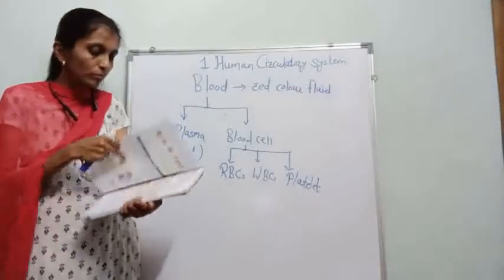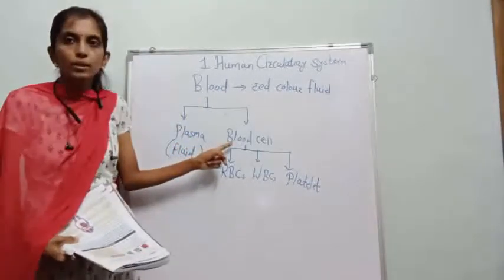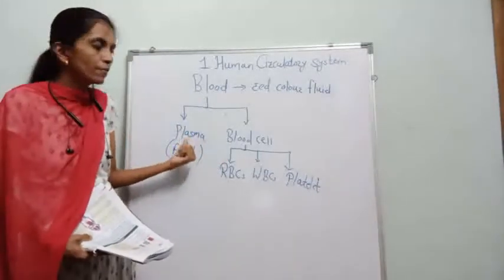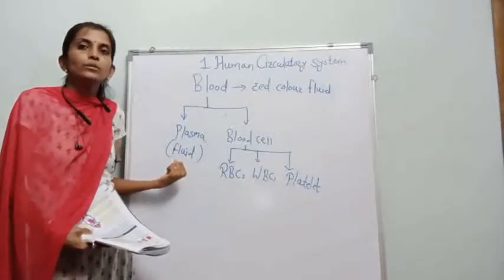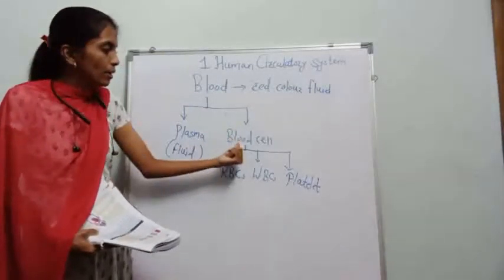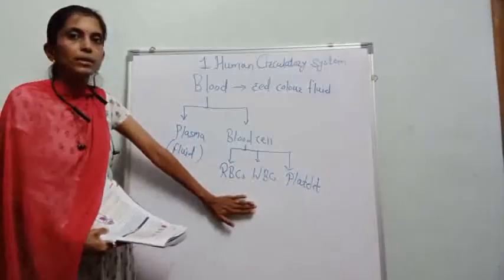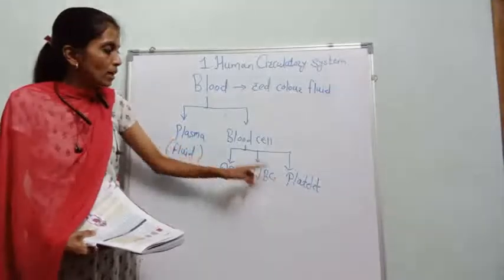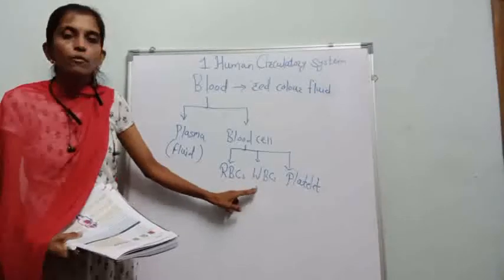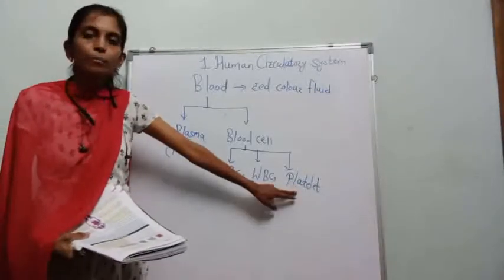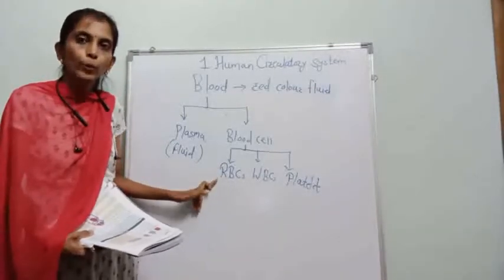So, to summarize: blood has two parts — plasma and blood cells. Plasma is a fluid that carries nutrients. Blood cells include RBCs, WBCs, and platelets. RBCs mean red blood cells — they are the red color pigment that contains hemoglobin. WBCs are white blood cells that play an important role in fighting infections.